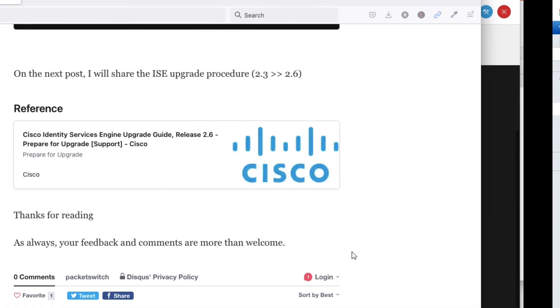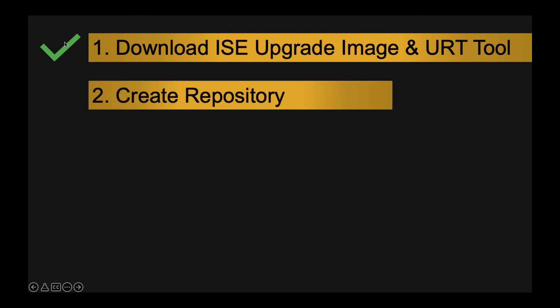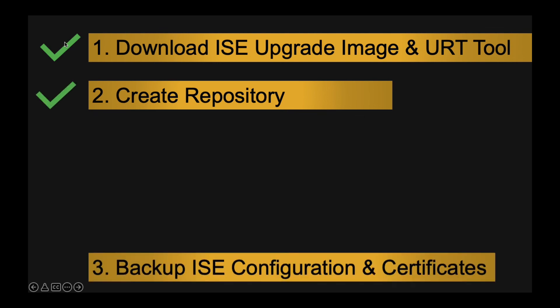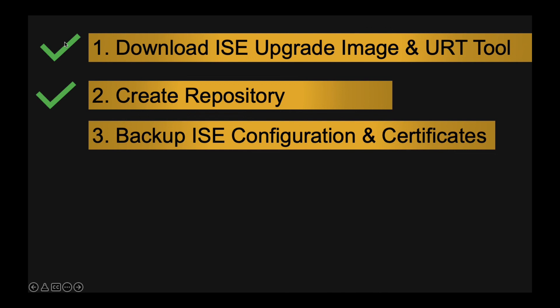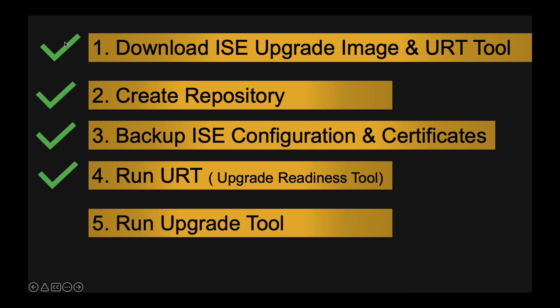To summarize: In Step 1 we downloaded the ISE upgrade image and URT tool. In Step 2 we created a repository. In Step 3 we took a backup of the ISE configuration and certificates. In Step 4 we ran the URT Upgrade Readiness Tool to fix database corruption and check configuration. In Step 5 we ran the upgrade tool. The upgrade has completed successfully. Thanks for watching, have a nice day.